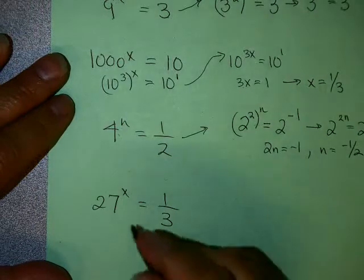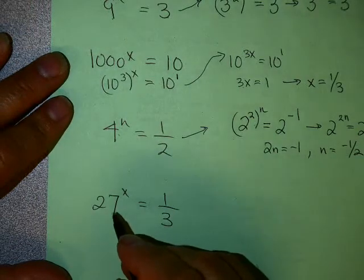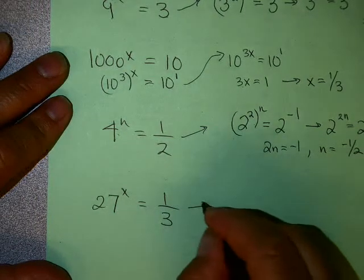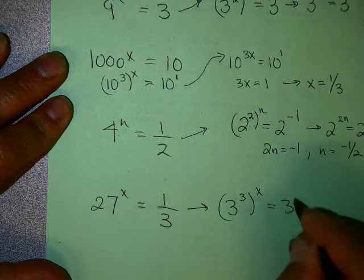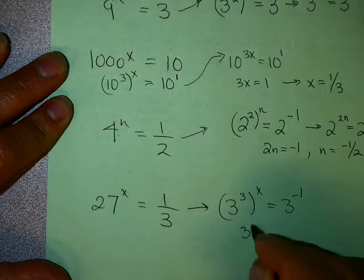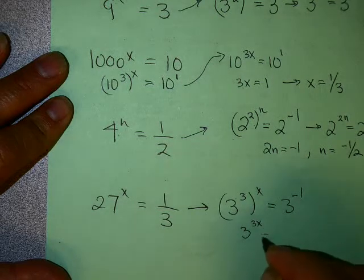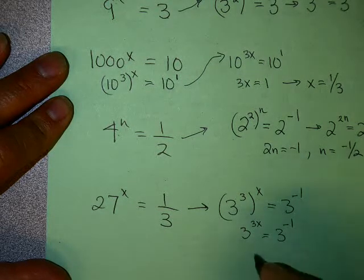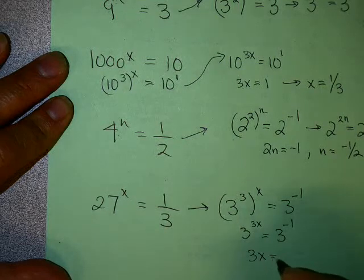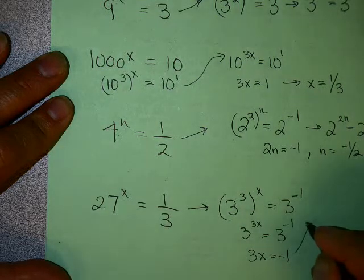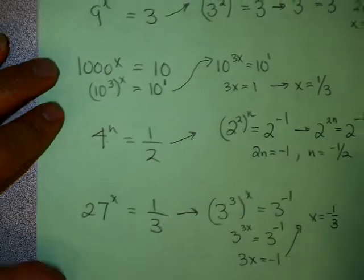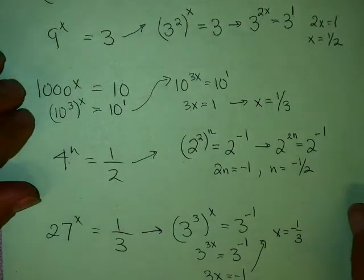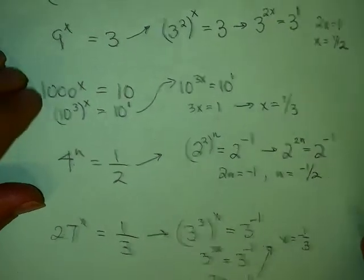One more to try: 3 cubed is 27 and 1/3 is 3 to the minus 1. So that's 3 to the 3x equals 3 to the minus 1, meaning 3x equals minus 1, or x equals minus 1 third. Using the rules of exponents and finding the same base, you can often solve exponential equations.